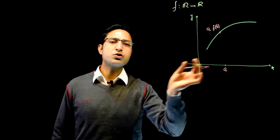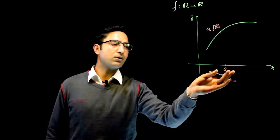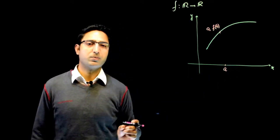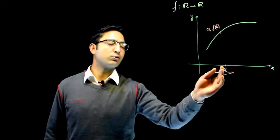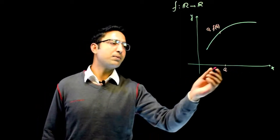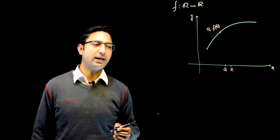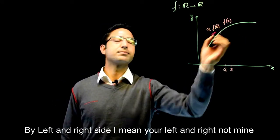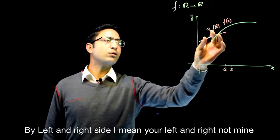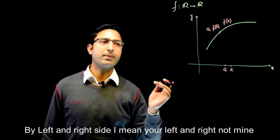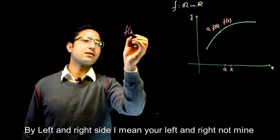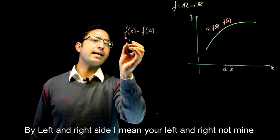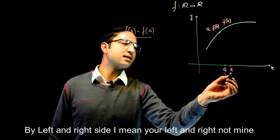Now if I take some x which is very close to a — taking x close to a means I take x to the left or right of a but very close to it. Let me take x to the right of a. The corresponding function value at that point will be f(x). If I look at the difference between f(x) and f(a), their difference will be f(x) minus f(a), and I divide it by the difference x minus a.